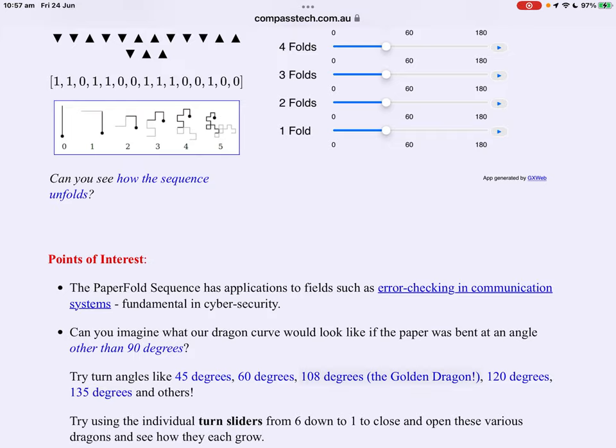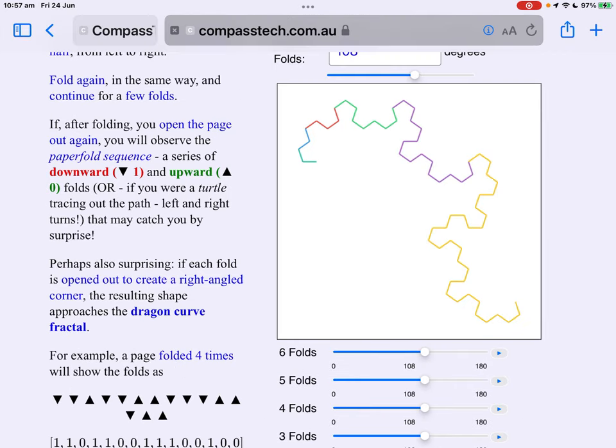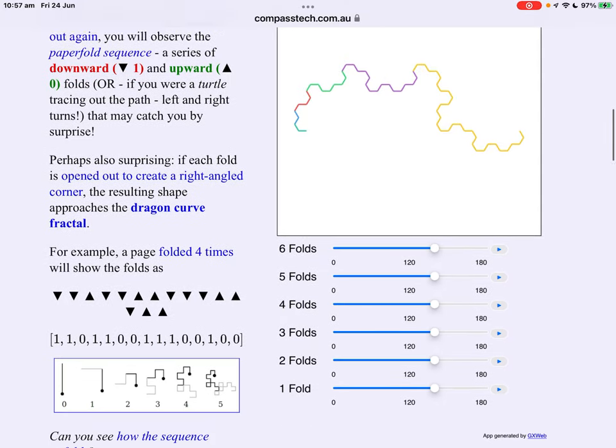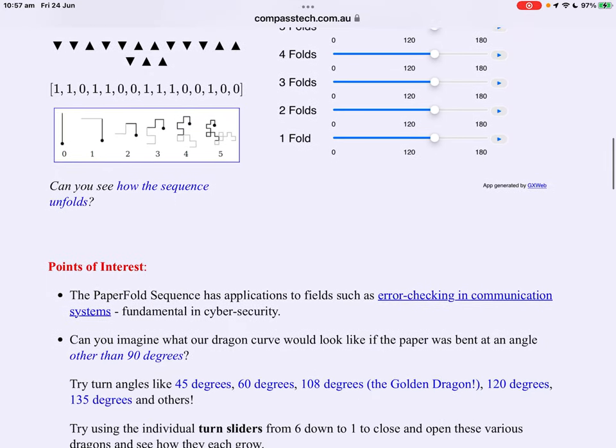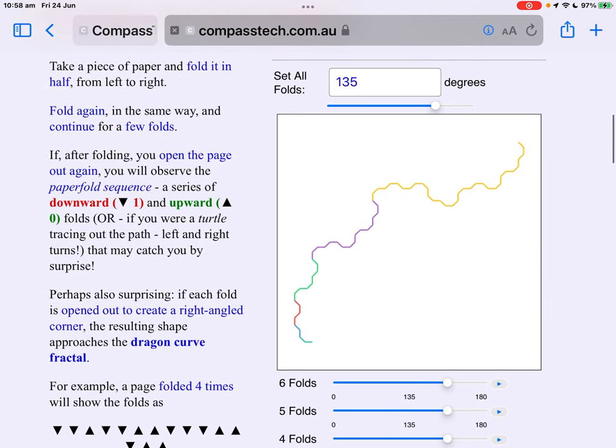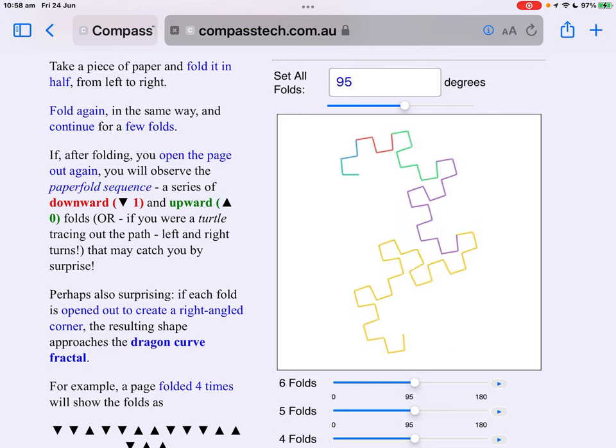Then there's the golden dragon, 108 degrees. 120 degrees and so on. And these now start to give us an idea of why such a shape might be called a dragon curve. But we'll see more of that in a minute.